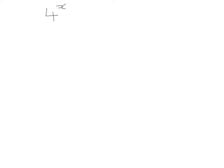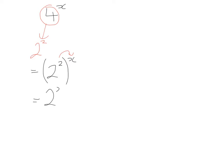The next thing I want to show you is if we have 4 to the power of x and we need to write it with a base number of 2. Forget about the x for a minute and just concentrate on 4. We know 4 written with base 2 becomes 2 squared. Now add that back in — so that's 2 squared — and put a bracket around it, then pop the x back on the outside. This is rule number 4 of indices: when we have a power raised to another power, you multiply them. So we multiply the 2 by the x, giving 2 to the power of 2x.